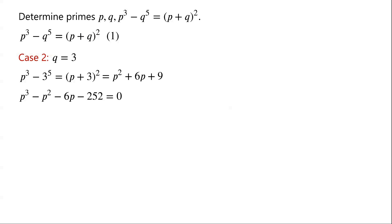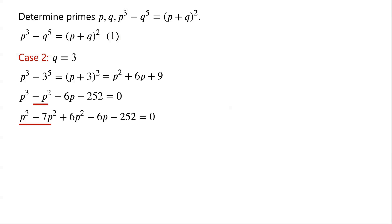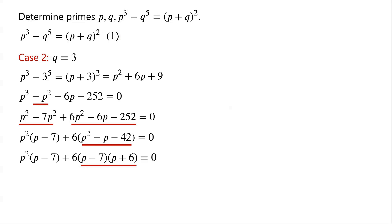We will solve it by using the factorization method. Negative p squared can be written as negative 7p squared plus 6p squared. p cubed minus 7p squared can be written as p squared times p minus 7. And 6p squared minus 6p minus 252 can be written as 6 times p squared minus p minus 42, which factors as 6 times p minus 7 times p plus 6. Now the two terms have a common factor p minus 7.